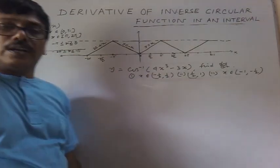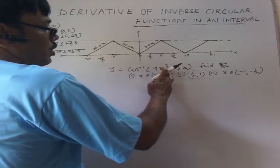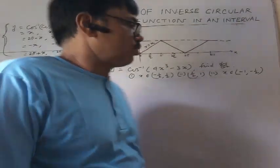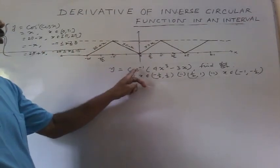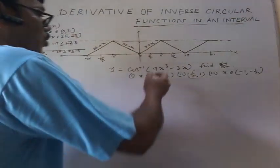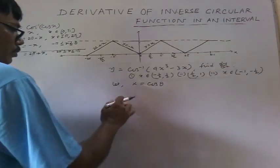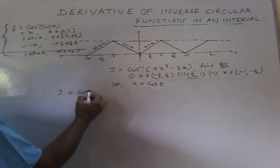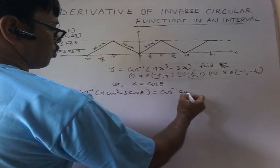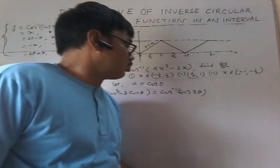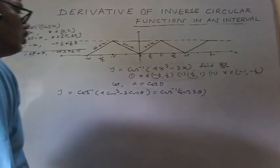Now solve a problem involving cos⁻¹: let y = cos⁻¹(4x³ − 3x), find dy/dx. The different restrictions are given. If no restriction is given, we generally write it as 3 cos⁻¹(x). But we must consider the restriction. Let x = cos θ, so y = cos⁻¹(4cos³θ − 3cosθ) = cos⁻¹(cos 3θ).